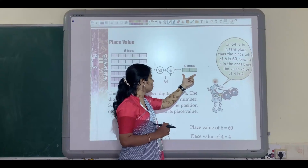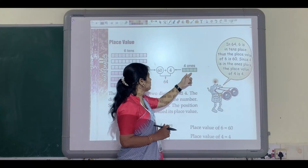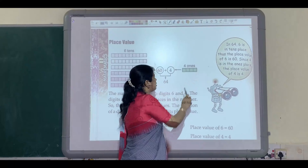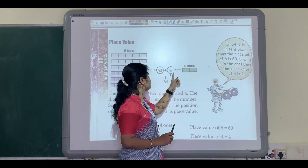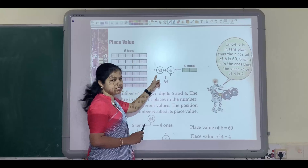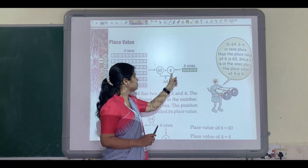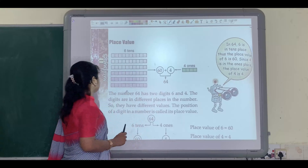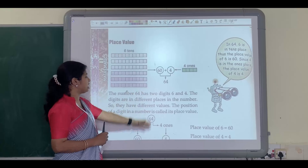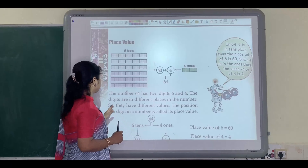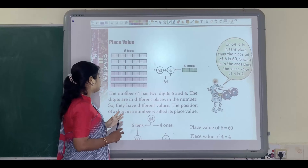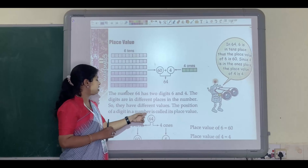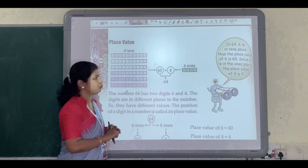And here one more row is given. How many columns are there in this row? 1, 2, 3, 4 — that is 4 ones, which means 4. So 6 tens means 60, plus 4 ones means 4, and 60 plus 4 is equal to 64. Children, the number 64 has two digits: 6 and 4. The digits are in different places in the number, so they have different values. The position of a digit in a number is called its place value.